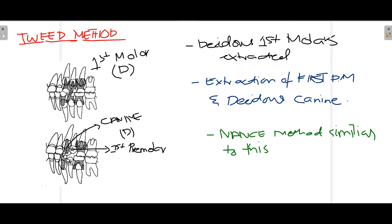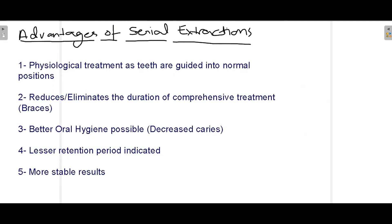In Tweed's method, which is similar to Nance's method, the deciduous first molar is extracted around the age of eight years, as marked by a star in the image. Then the extraction of the first premolar is performed simultaneously with the deciduous canine. These steps ensure that remaining permanent teeth erupt in their normal position. In Nance's method, similarly, the deciduous molar is removed first, followed by removal of the deciduous canine and first premolar.